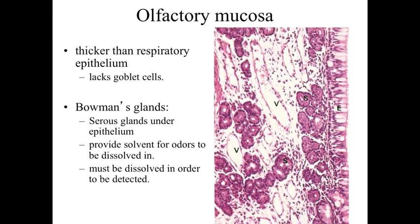Underlying the olfactory mucosa is going to be Bowman's glands. Bowman's glands are sero-secreting glands that essentially secrete a proteinaceous substance which serves as a solvent for odors. Basically, it's going to coat the lining, and as particles are inhaled, some of those particles are going to become dissolved within the secretions of Bowman's glands. By being dissolved, they're able to diffuse along the epithelial lining and essentially trigger sensory cells, allowing smells to be detected.